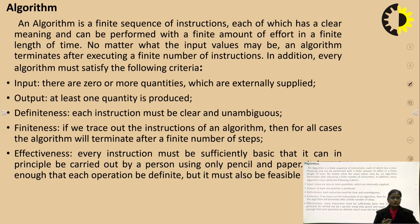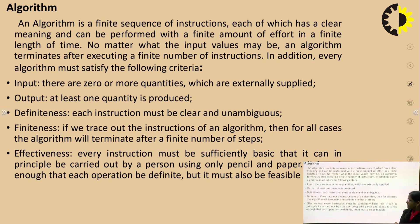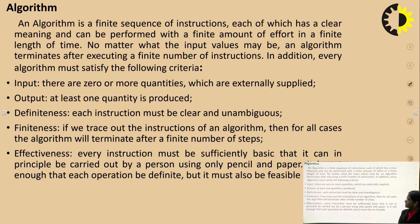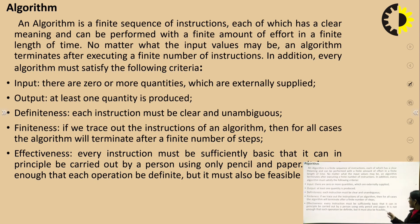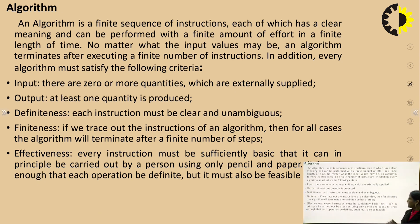Finiteness means if we trace out the instructions of an algorithm, then for all cases the algorithm will terminate after a finite number of steps. Then effectiveness means every instruction must be sufficiently basic that it can in principle be carried out by a person using only pencil and paper. It is not enough that each operation be definite, but it must also be feasible.